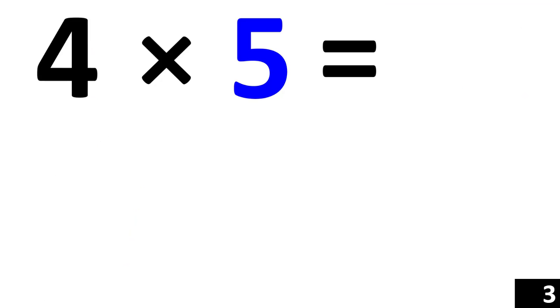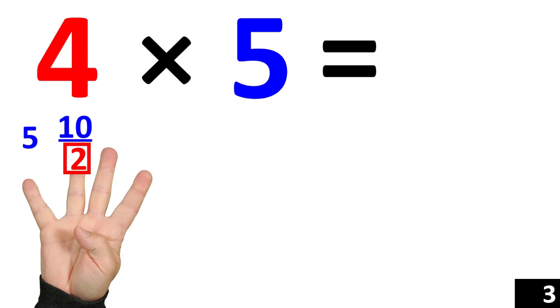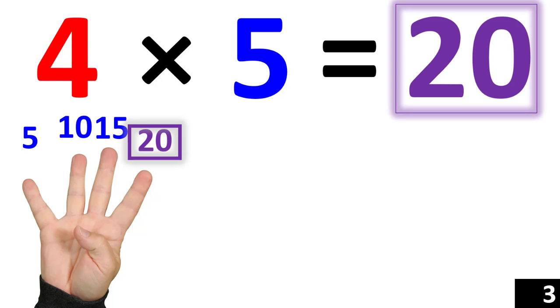4 times 5 is the same thing as counting by 5 four times. 5. 10. 15. 20. Which means 4 times 5 is equal to 20.